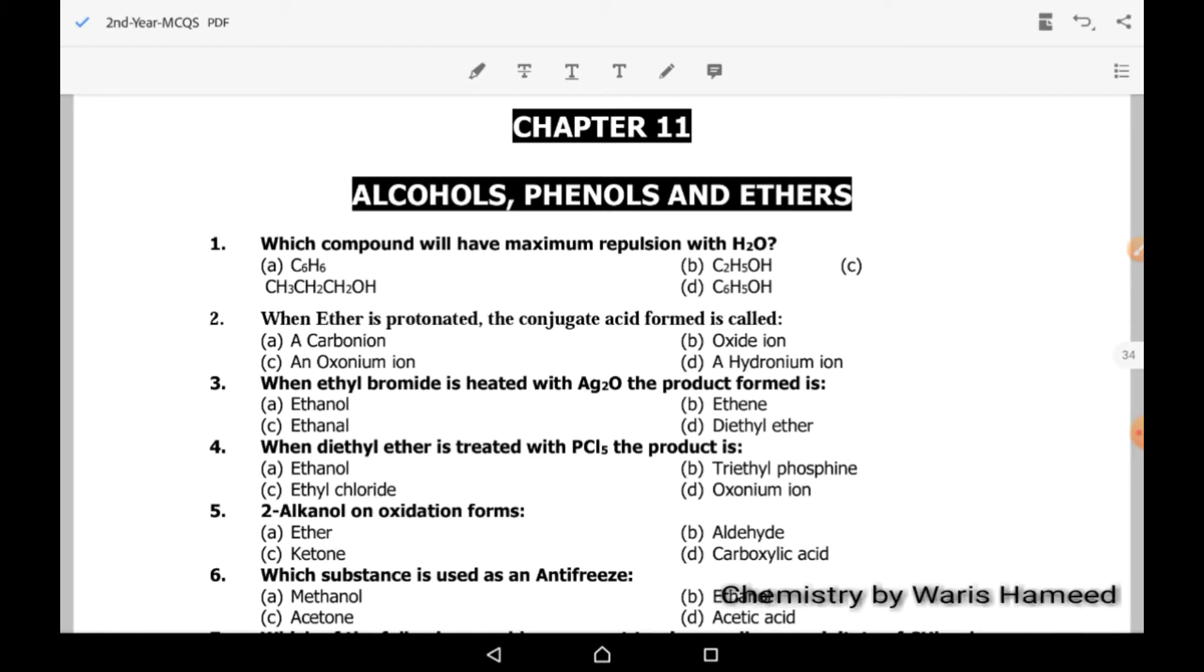Now going to first MCQs: which compound will have maximum repulsion with water? We know that water is a polar molecule and it will have maximum repulsion with non-polar. So among all these options, benzene C6H6 is the only option which is non-polar, which will have maximum repulsion with water. So option A is correct.